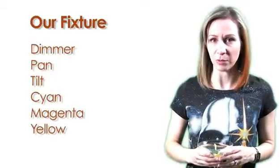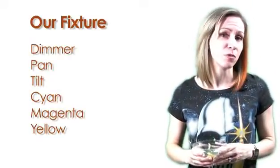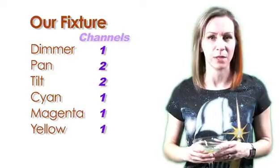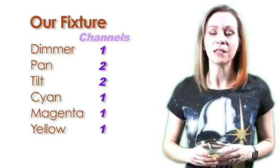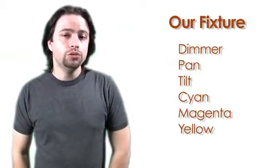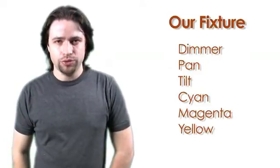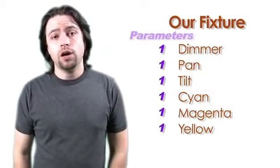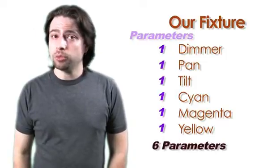Moving lights have multiple attributes that require multiple channels, or slots, of control. Let's say that we have a fixture that has dimmer, pan, tilt, and color mixing — cyan, magenta, and yellow. Both pan and tilt are each 16-bit parameters, which means that pan requires two DMX channels of control, as does tilt, making this unit a total 8-channel fixture. On a Grand M.A., each 16-bit channel is calculated as one parameter. Even though pan requires two channels of DMX, it's still a single attribute — pan. So it's considered one parameter of calculation, as is tilt. So our 8-channel fixture only requires 6 parameters of control on the M.A.